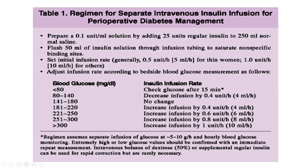If blood glucose is 180 to 220 mg/dL, increase the infusion by 4 mL per hour — so if currently at 10 mL, increase to 14 mL; if at 10 mL in the lower range, reduce to 6 mL. These adjustments are made based on each blood glucose reading.